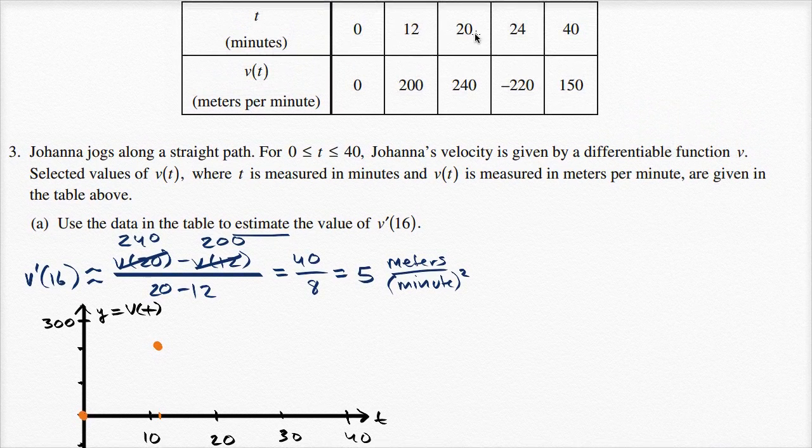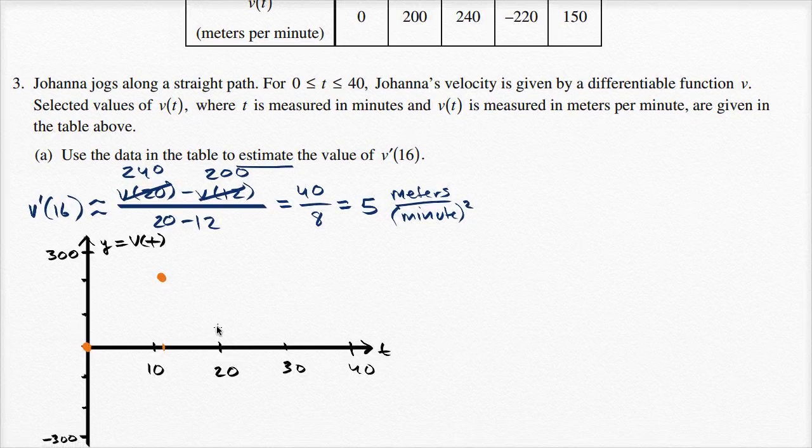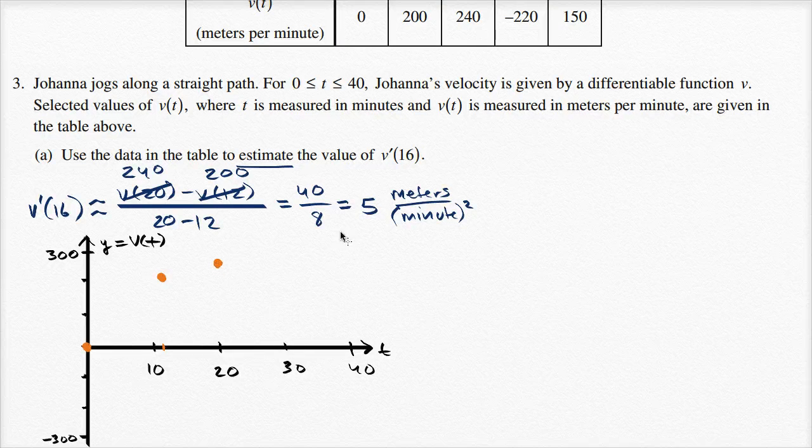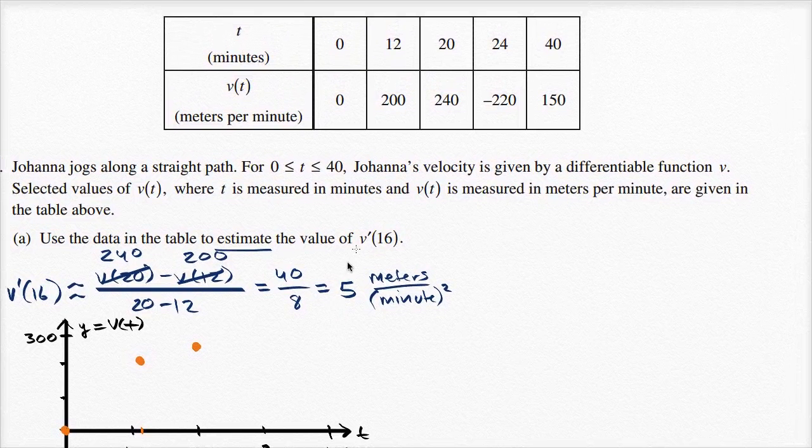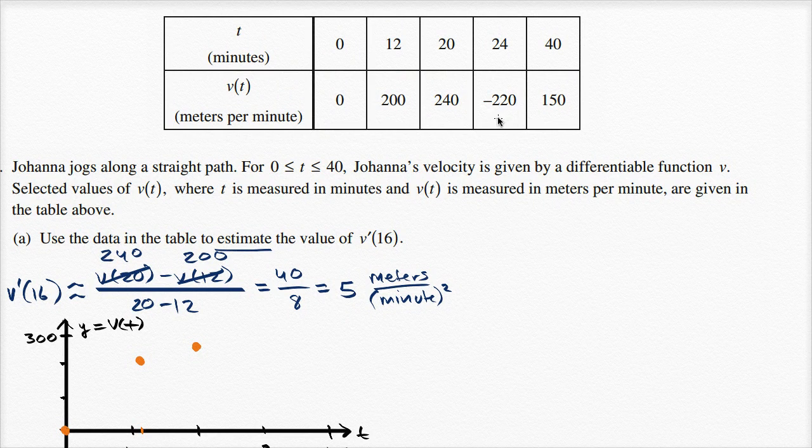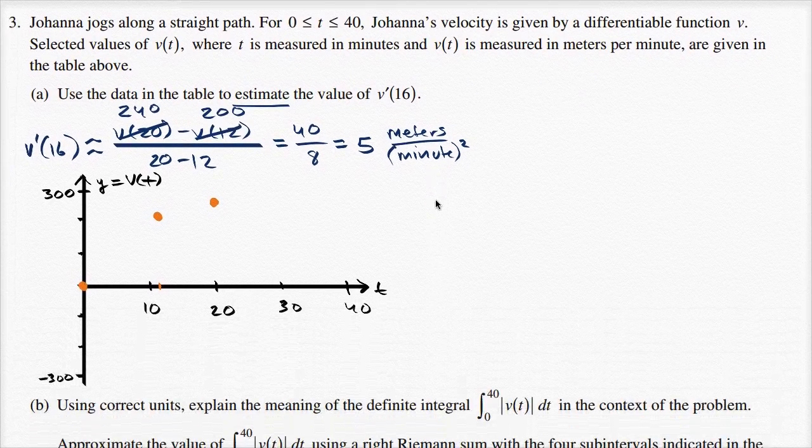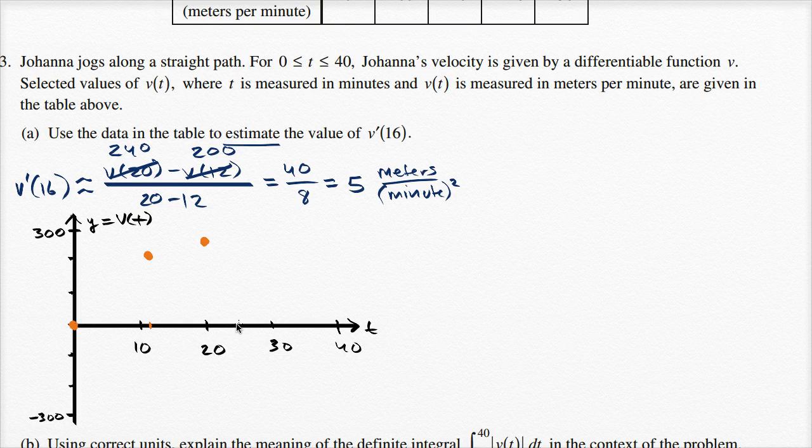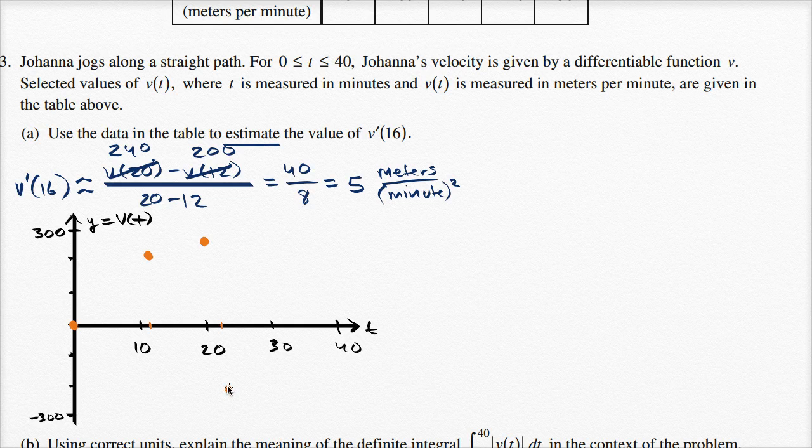When our time is 20, our velocity is going to be 240. So when our time is 20, our velocity is 240, which is going to be right over there. And then when our time is 24, our velocity is negative 220, so she switched directions. So when it's 24, so 24 is going to be roughly over here, it's going to be negative 220. So negative 220 might be right over there.